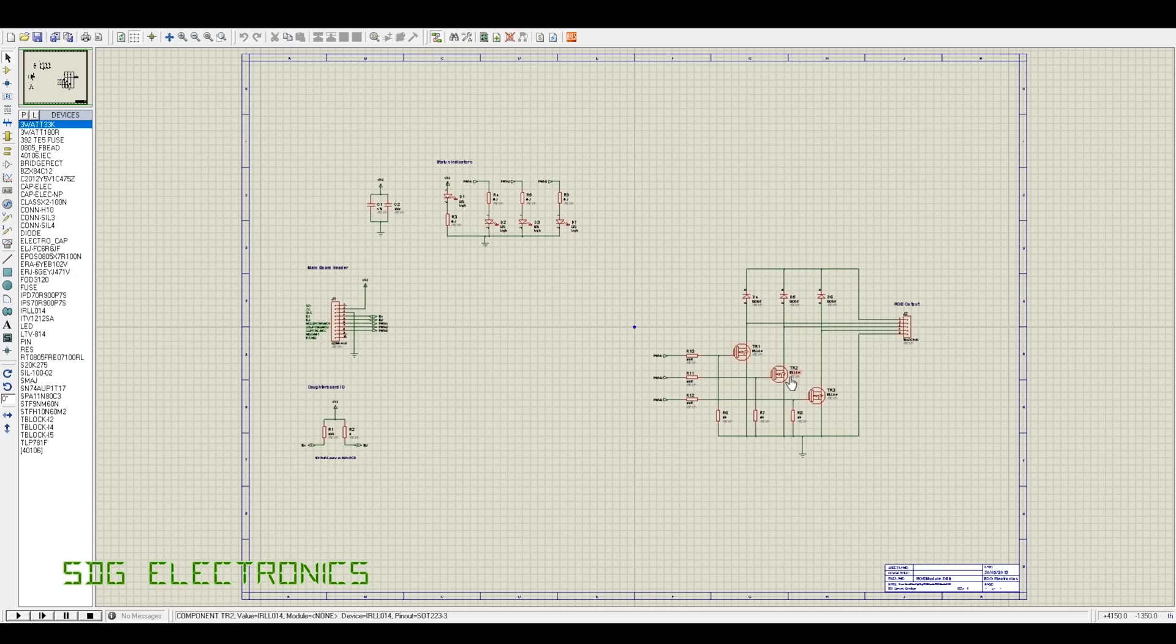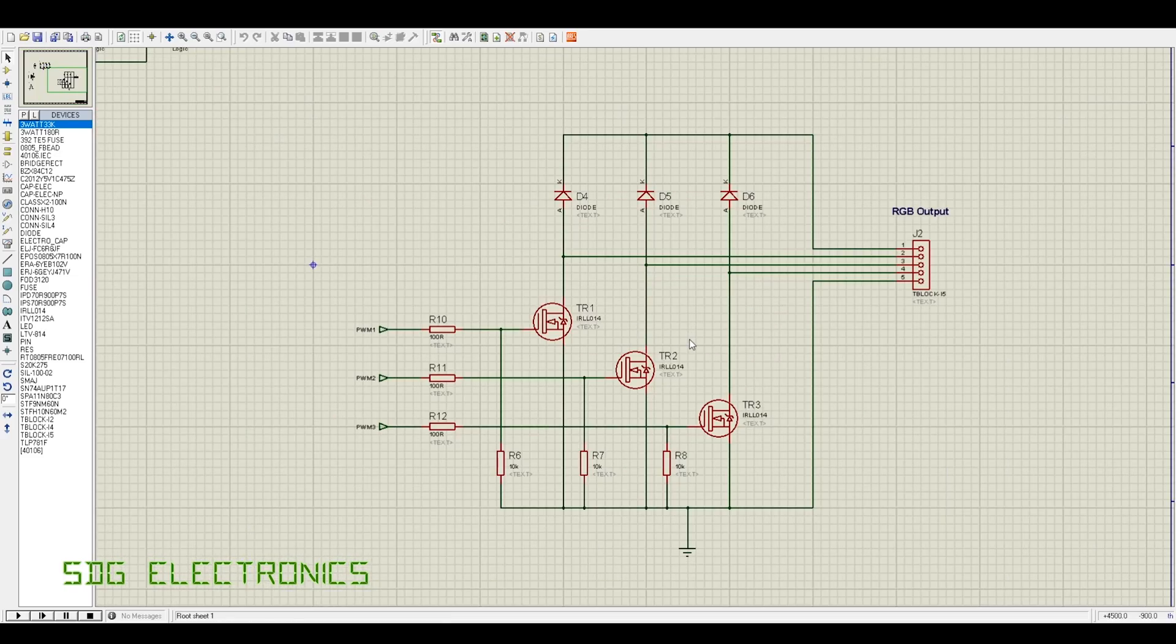The bit of circuitry that's of interest is this simple driver circuit. We've got our PWM signal from the main board fed into these three nodes. We go through a series resistor which takes off the high frequency edge of the PWM waveform to reduce emissions.